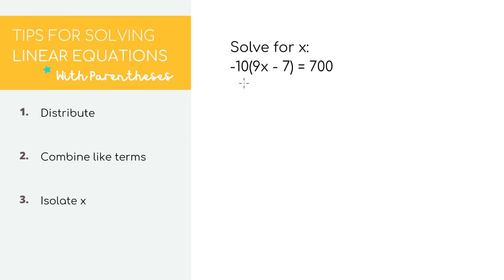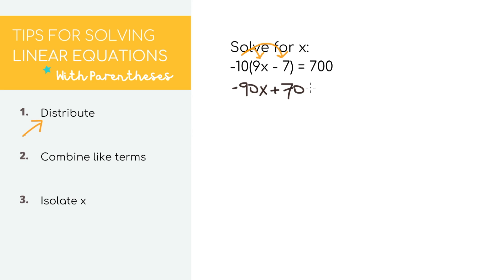Let's do another one, this time with negative values. Our first step is still to distribute to get rid of the parentheses. We take the number directly outside, which is negative 10, and multiply it by the first number inside, which is 9x. Negative 10 times 9x equals negative 90x. We also multiply that same negative 10 by the second number, which is negative 7. Negative 10 times negative 7 equals positive 70. On the right side, we just bring down the 700.